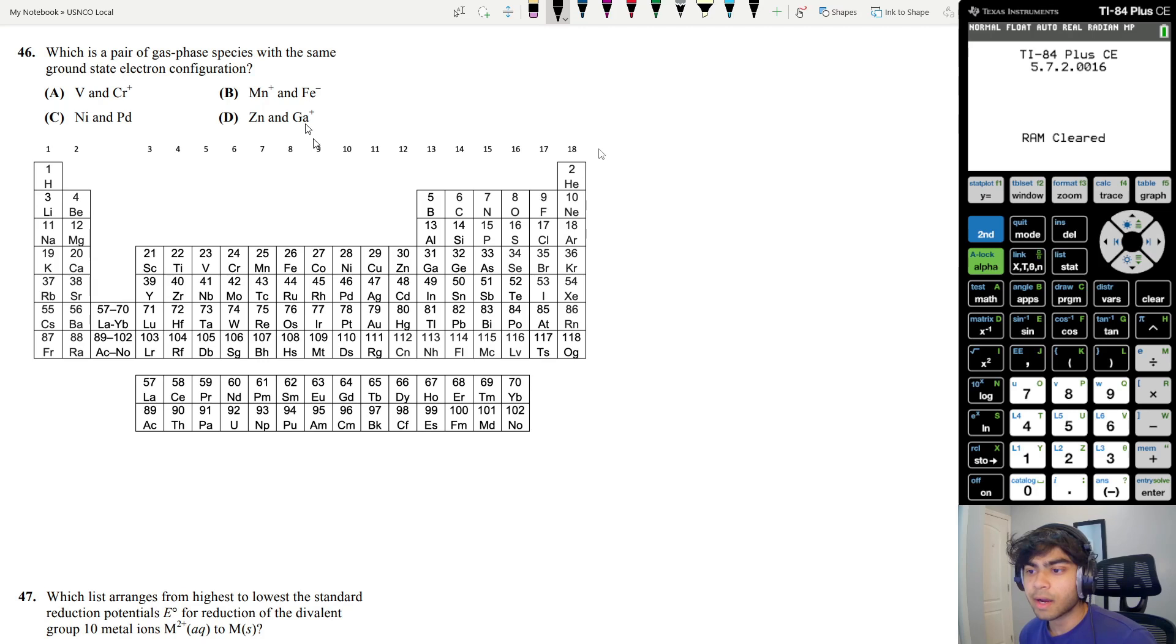B says manganese plus and iron minus. Manganese plus, 24 electrons since it loses one. And then iron minus, 27 electrons since it gains one. They don't have the same number of electrons. Nickel and palladium, straight up no, 28 and 46, definitely not. And then zinc is 30, gallium plus is 31, but it loses one, so 30. We can keep D. Now we have to pick between A and D.